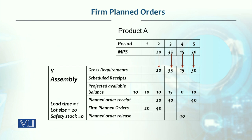Now, we have the projected available balance. The beginning balance, which was 10 units, is the beginning inventory. Lead time has come from inventory records — that is one period of lead time. The production lot size will be 20 units available, and there is no safety stock required.